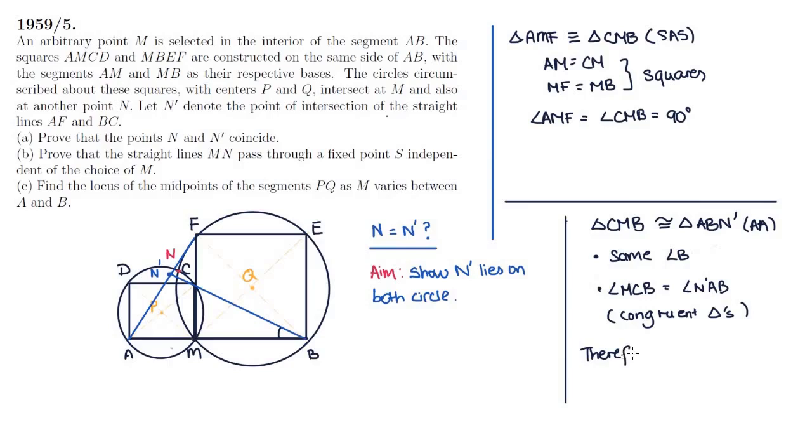Therefore, we know that angle AN'B is equal to angle CMB. And this is crucial, and angle CMB is 90. So, angle AN'B is also 90.